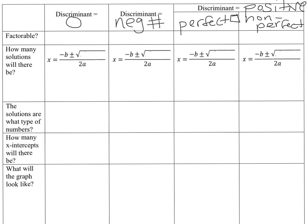Let's look at the discriminant of zero first. If you get a discriminant of zero, is it factorable? We ask ourselves: is zero a perfect square? Can we find the square root of zero? And the answer is yes. So this one is factorable. Now let's think about how many solutions there are going to be.